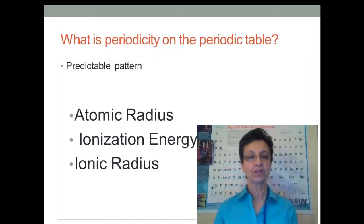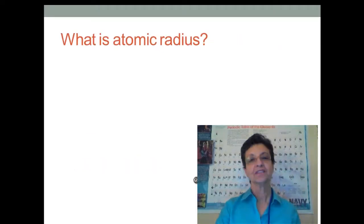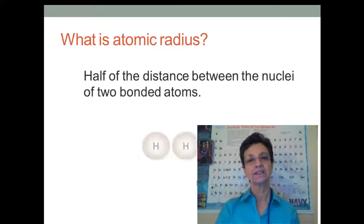These predictable patterns that we're going to talk about are atomic radius, ionization energy, and ionic radius. So what is atomic radius? The atomic radius is really described as half the distance between the nuclei of two bonded atoms.